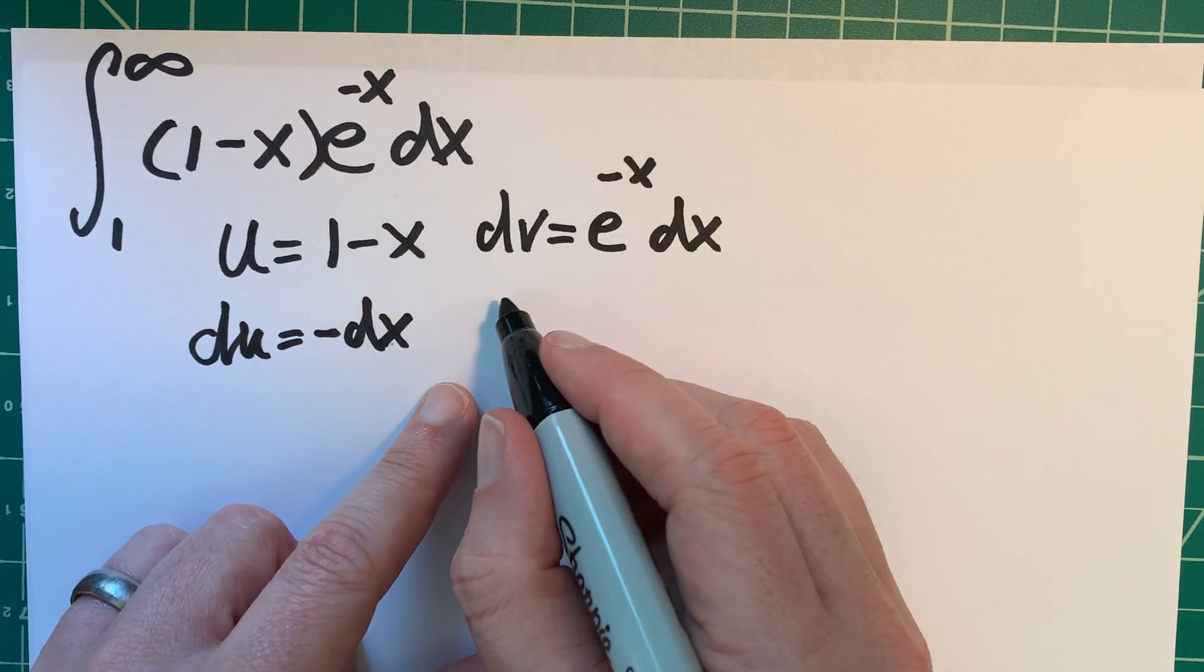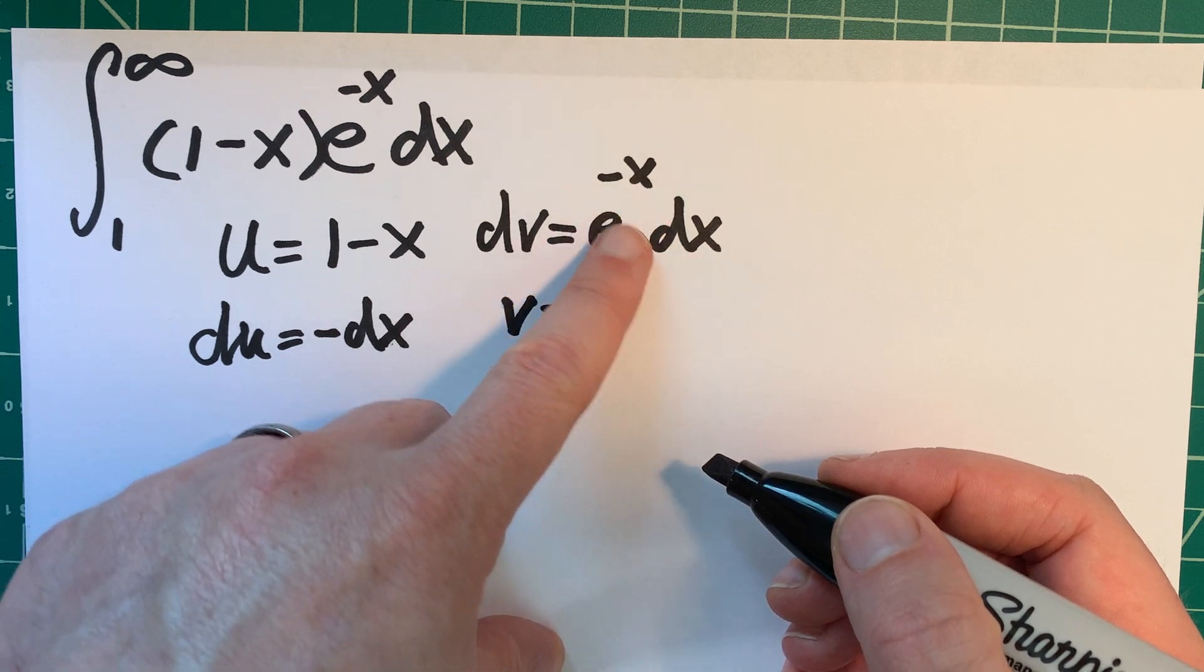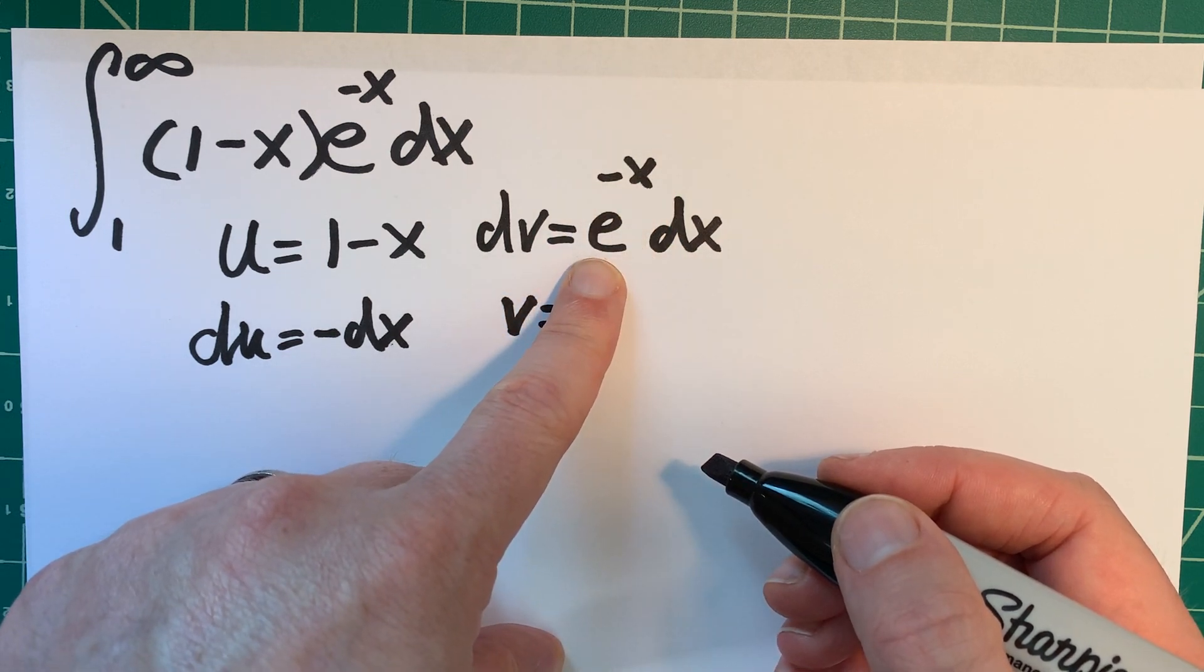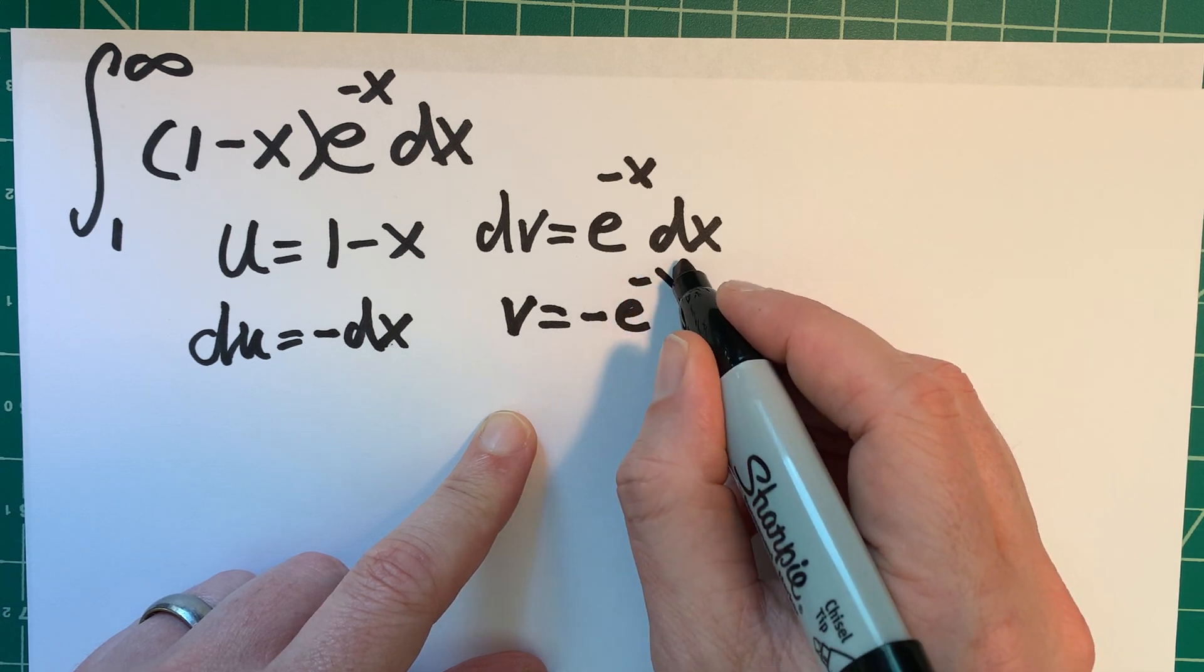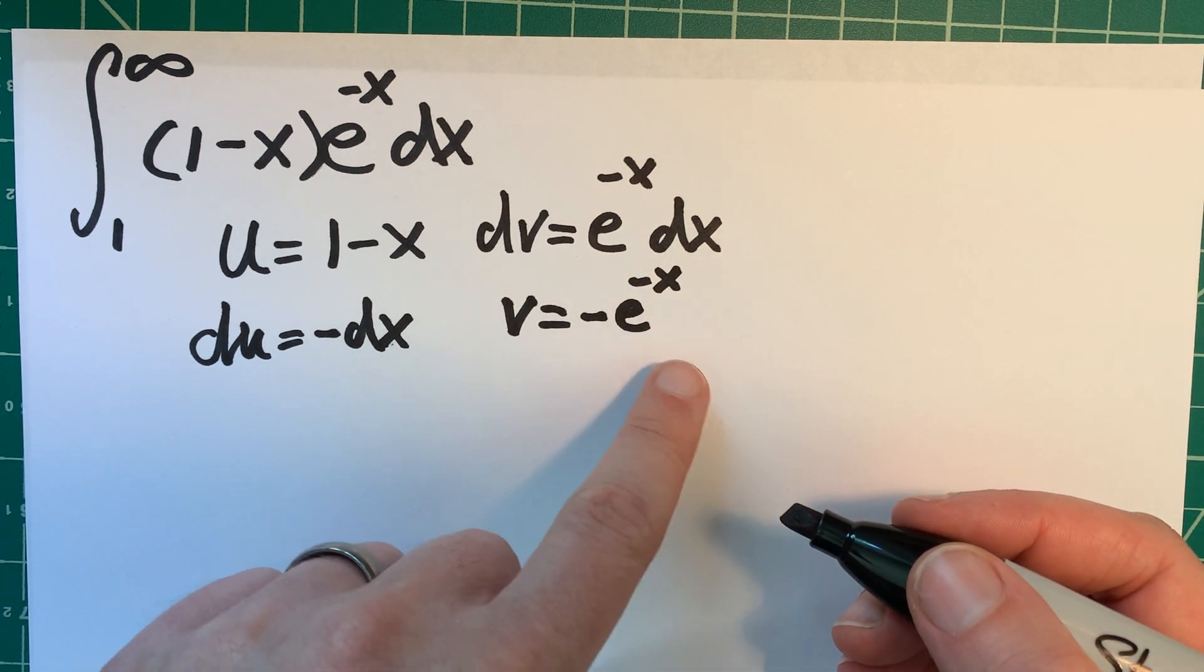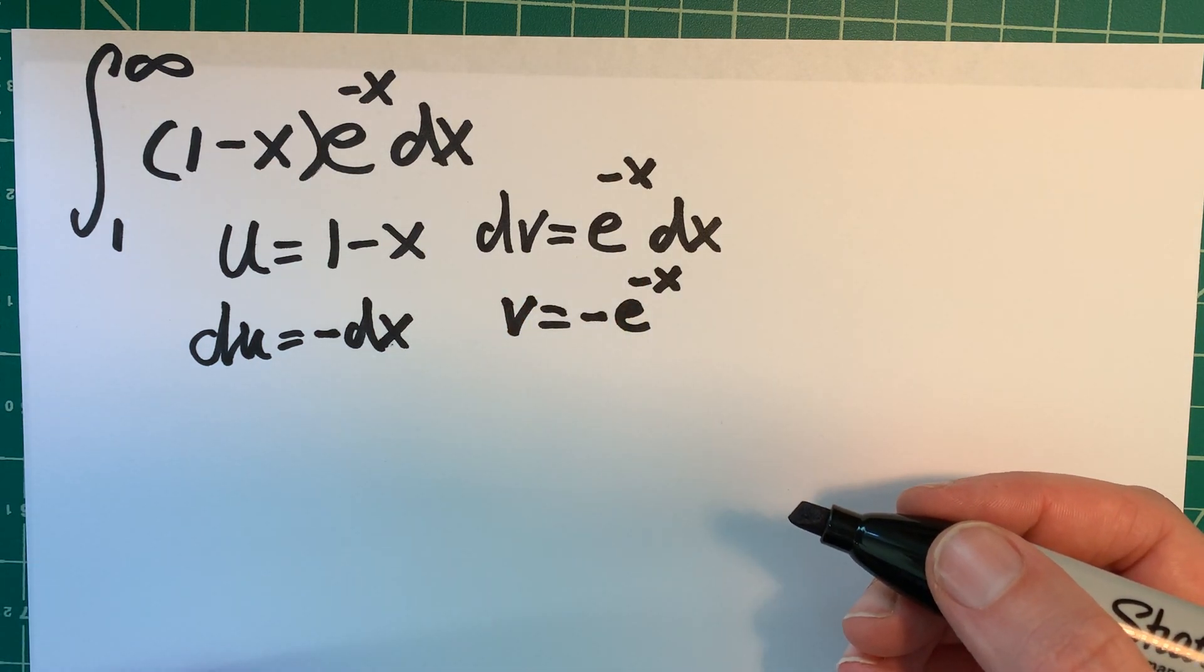So if I integrate both sides, then v, well, I need this to come back to what it is, so I think I'm going to have to go negative. Yeah. So if I take derivative of this function, it'll become this function. So that looks good, I think, as long as I didn't make any silly mistakes.